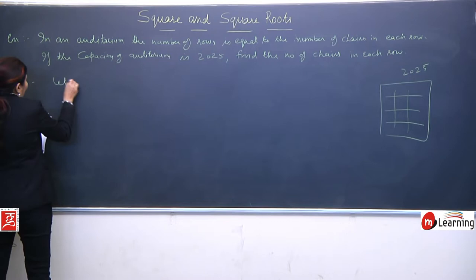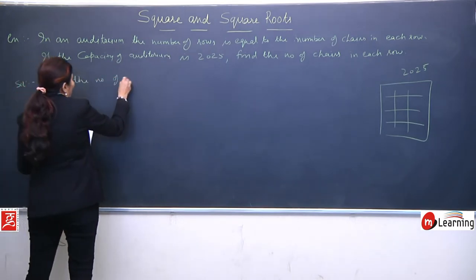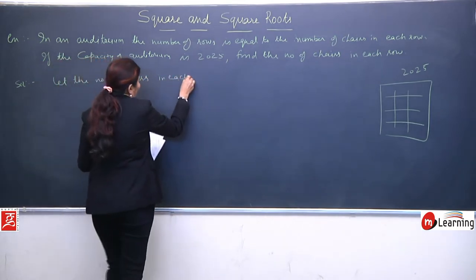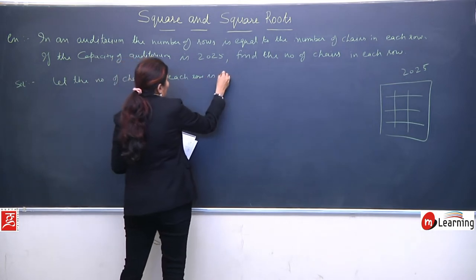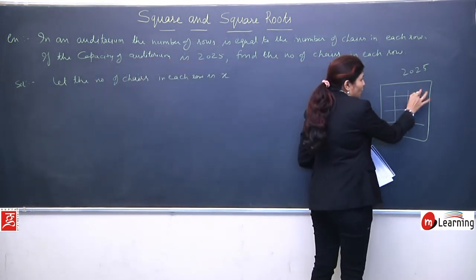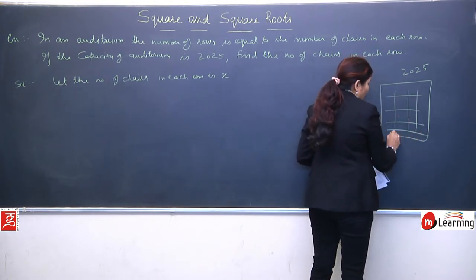Indirectly you can say the area is given, the total number of chairs and rows is 2025. To find the number of chairs, we need to take the square root. Let the number of chairs in each row be x. I'm giving you an example: if there are 3 rows, then 3 chairs everywhere. If 4 rows, then 4 chairs.